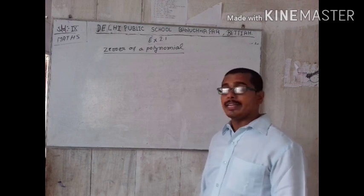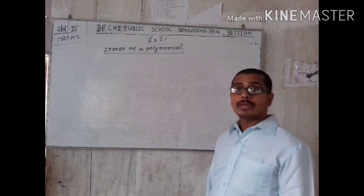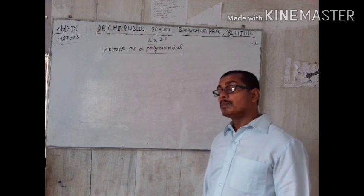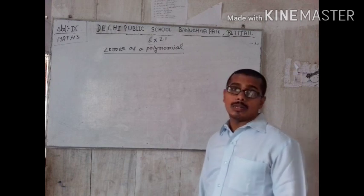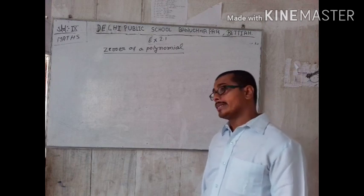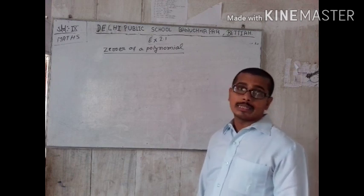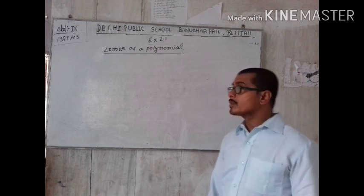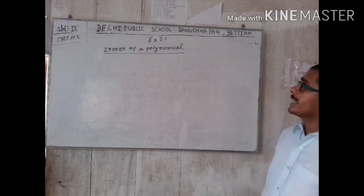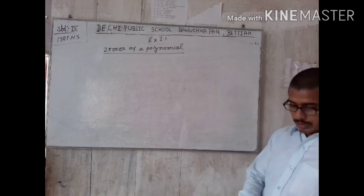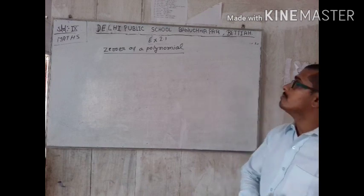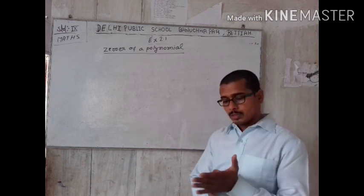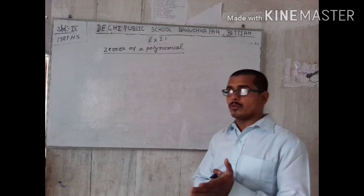On the basis of degree we also classified polynomials as a linear polynomial, quadratic, biquadratic, cubic. So today we are going to start the topic — zeros of a polynomial, what is called zeros of a polynomial.